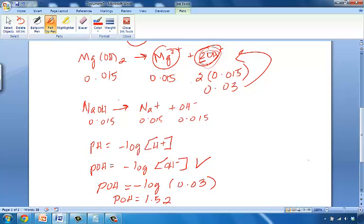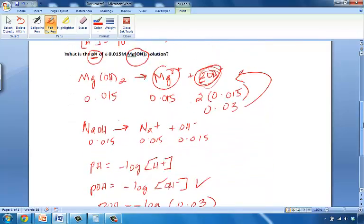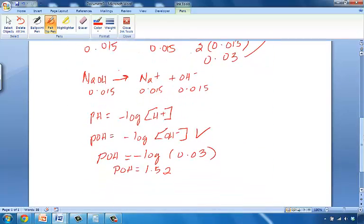All right, so let's go back to the problem. The problem asked us for the pH of this solution. What we have currently solved for is POH. So how can we convert POH to pH? Well, we need to use one more equation. So this was equation 1. We need one more equation, which is pH plus POH is equal to 14.